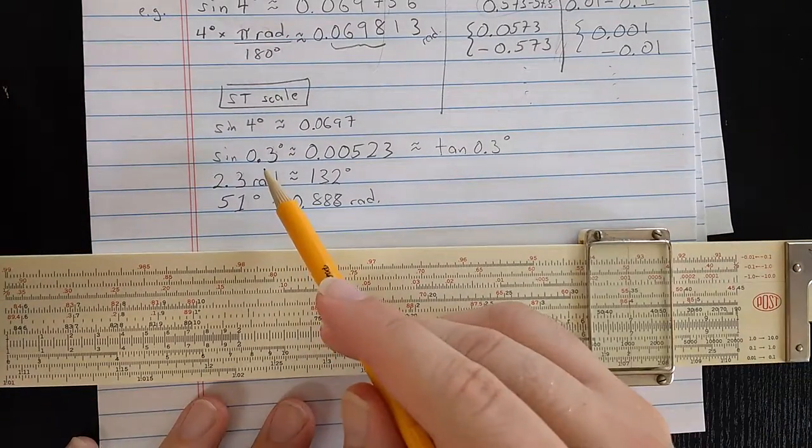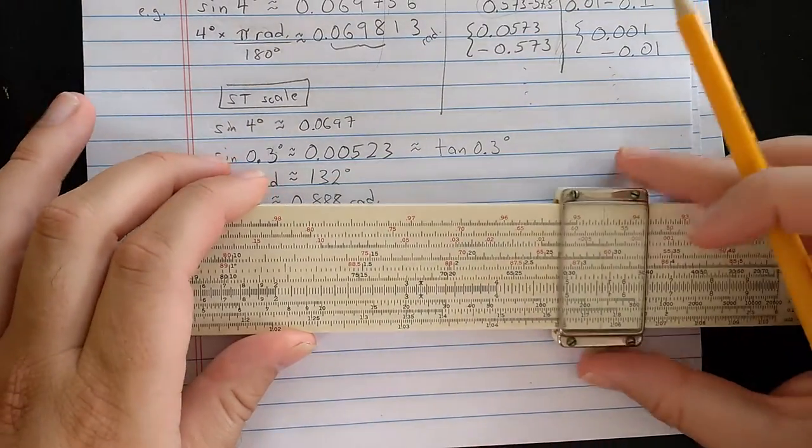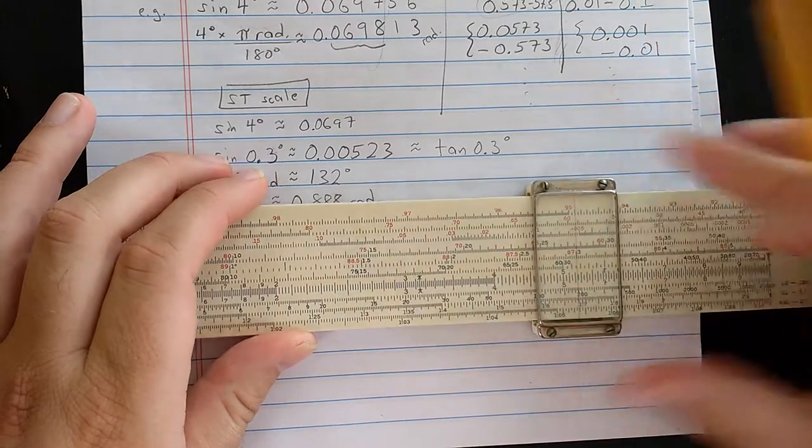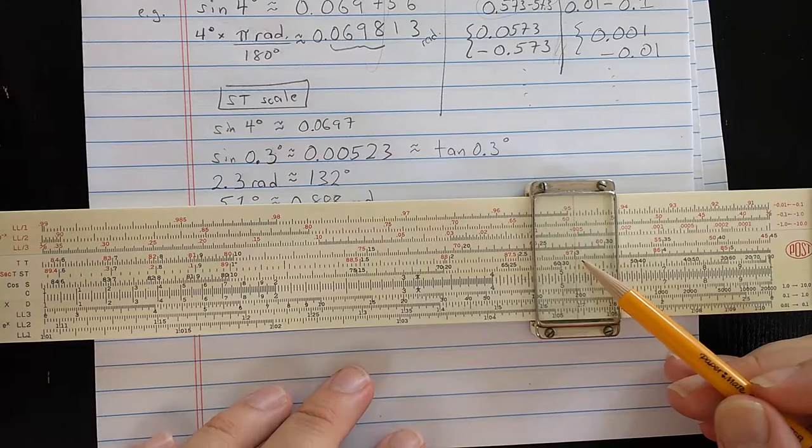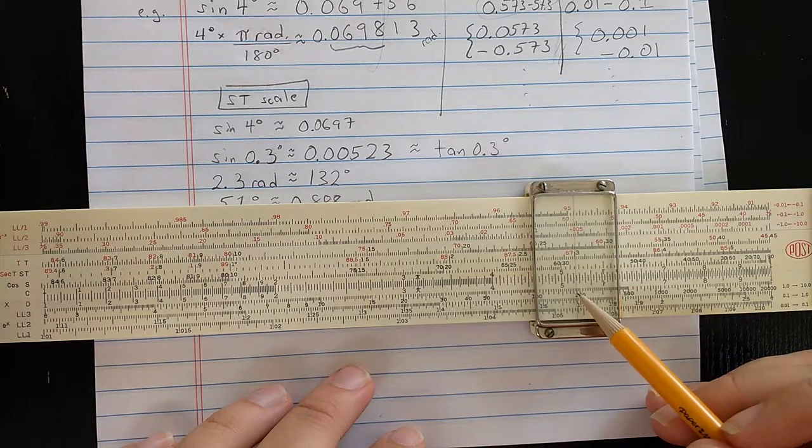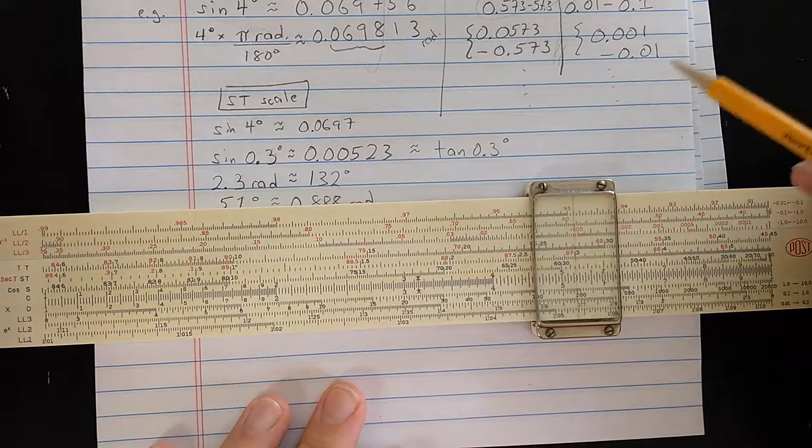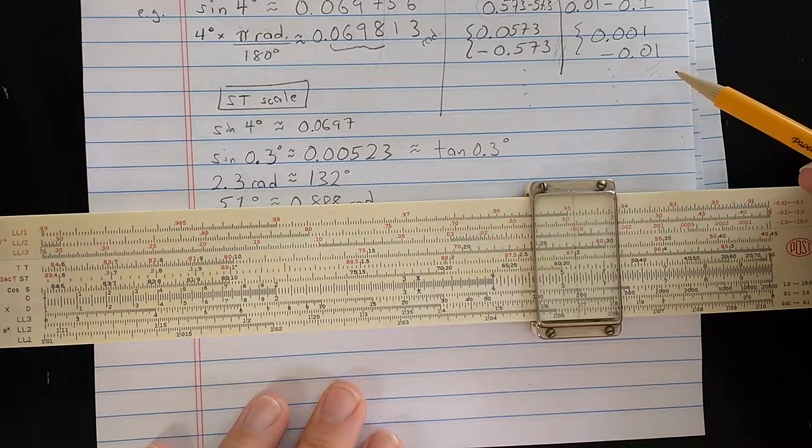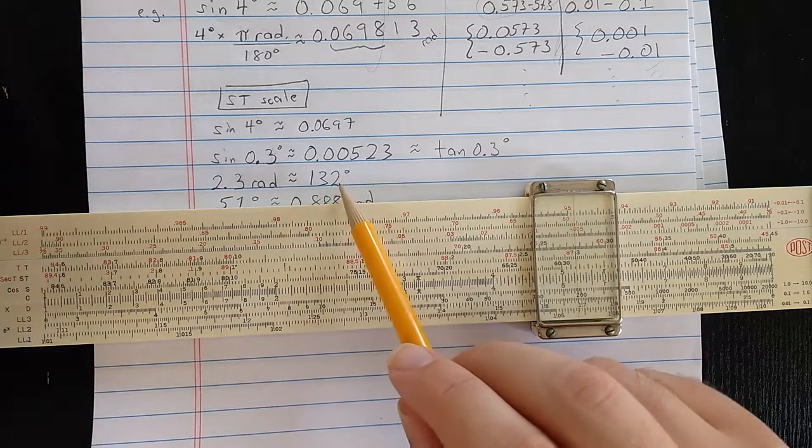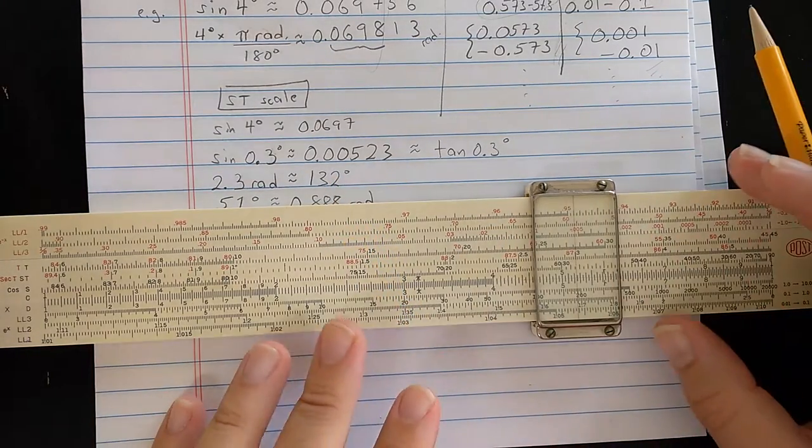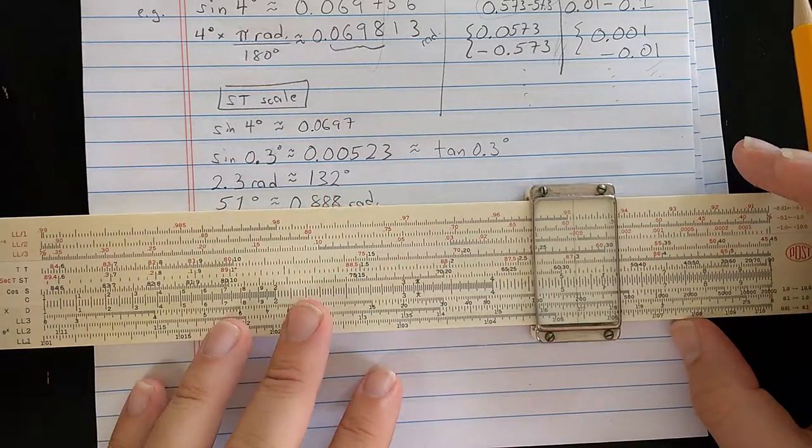So let's compute sine of 0.3 degrees. On the ST scale, I should find the 3. Found the 3 on the ST scale here. Then on the D scale, I read 523. But I'm in the next order of magnitude down from the normal one used in the ST scale. So that's not 0.0523, but 0.00523. So you can compute even smaller angles as well if you want.